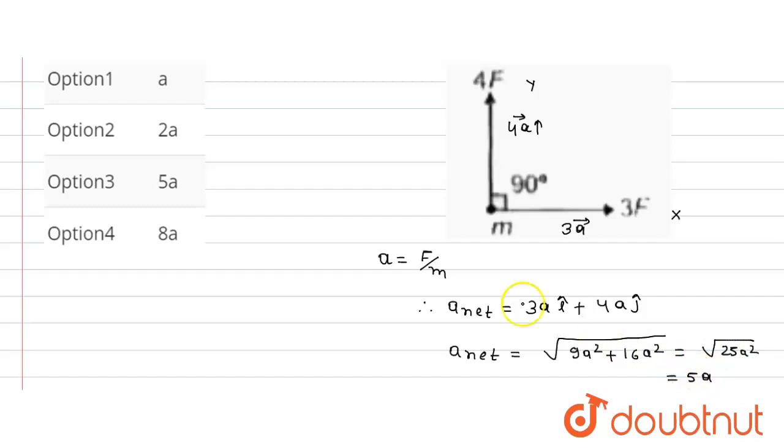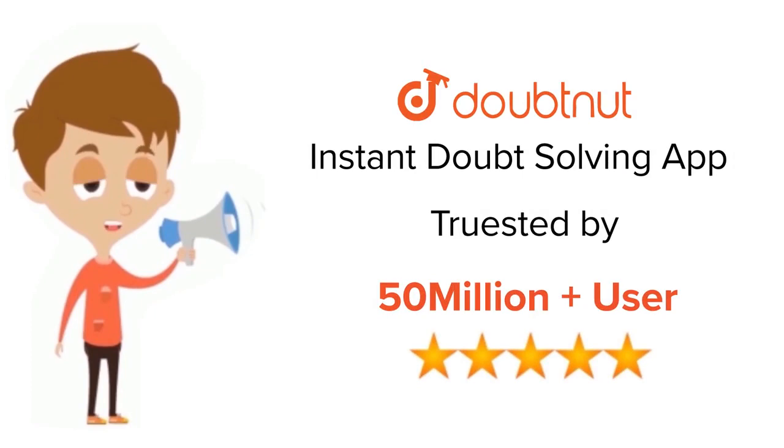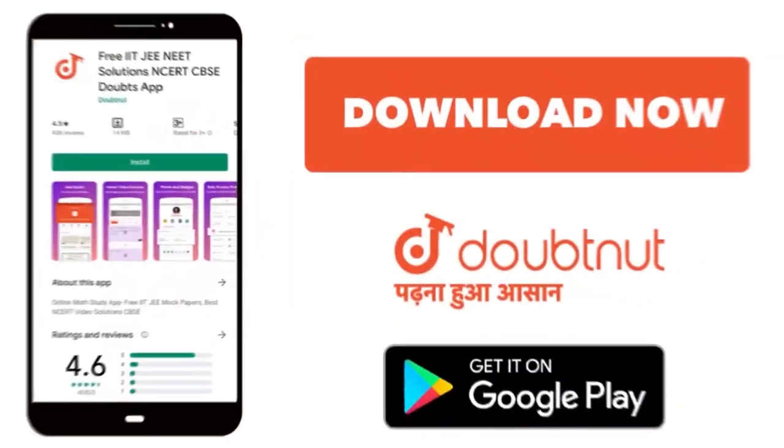Okay, so net acceleration magnitude will be 5a. So option third is the correct option. Thank you. For class 6 to 12th, IIT and NEET level, trusted by more than 5 crore students, download Doubtnet app today.